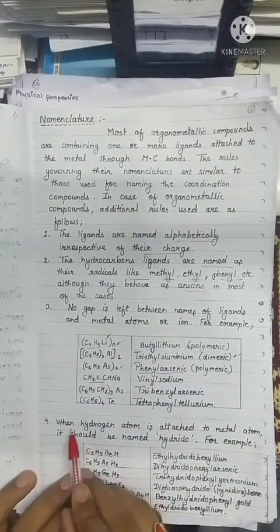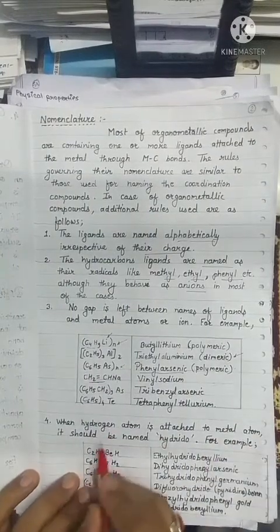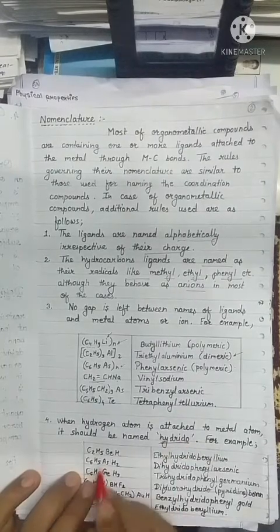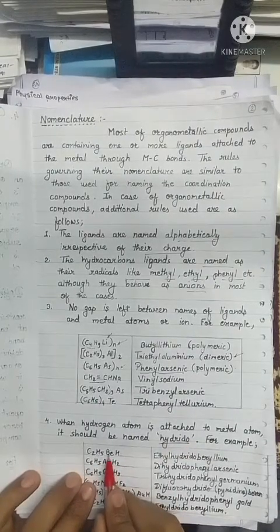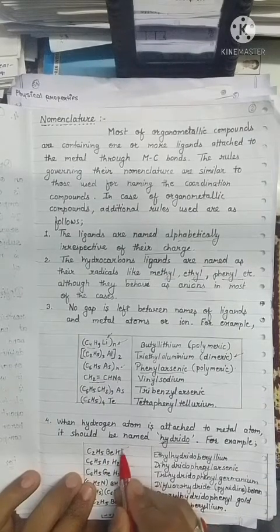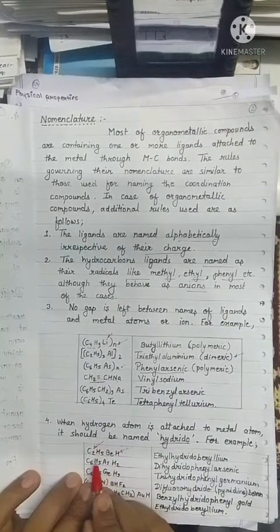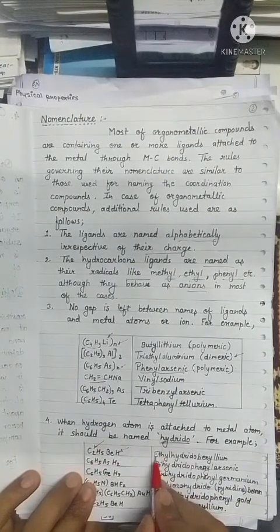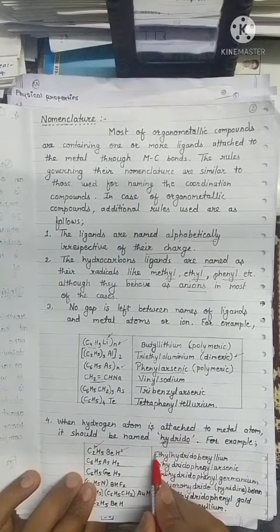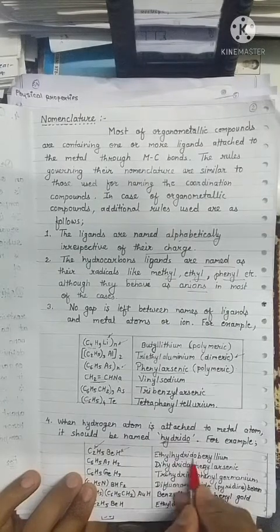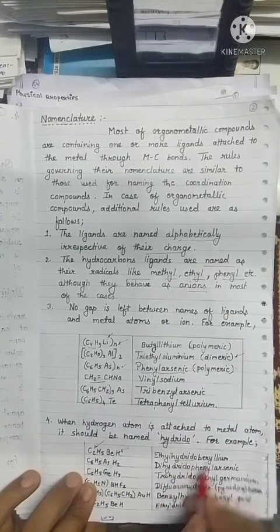Now an important thing: when a hydrogen atom is attached to a metal atom, it should be named as hydrido. Just see here — this beryllium is attached to hydrogen as well as ethyl. Since E comes before H in alphabetical order, ethyl is named first. So the name of this compound is written as ethyl hydrido beryllium.